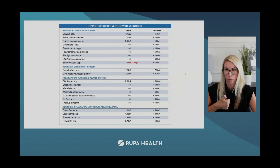In the opportunistic bacteria section, she shows a little strep overgrowth — still at the same order of magnitude (E3), but elevated. Strep thrives in a lower acid environment, which aligns with her hypochlorhydria picture. This is something to note and address in the treatment plan, though it's not severely alarming.